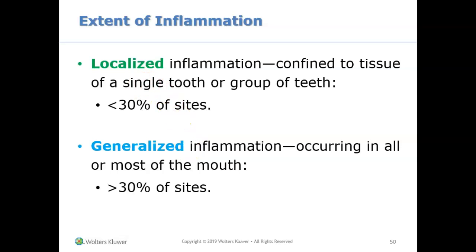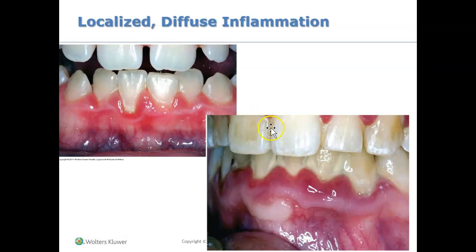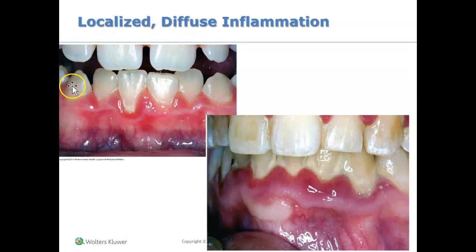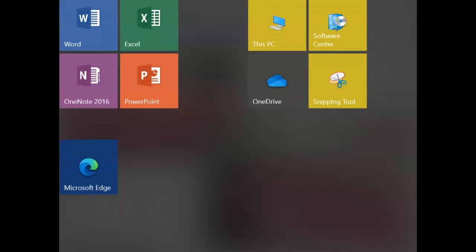Looking at this picture, we can see inflammation here — it's quite red. Let's hypothetically say the inflammation is only in the anterior region. In this person, the inflammation is only in the anterior region, so this would be considered localized, because it is less than 30 percent of the mouth.